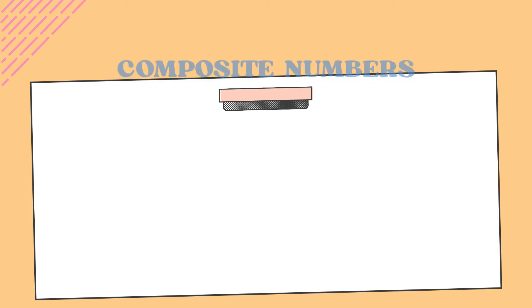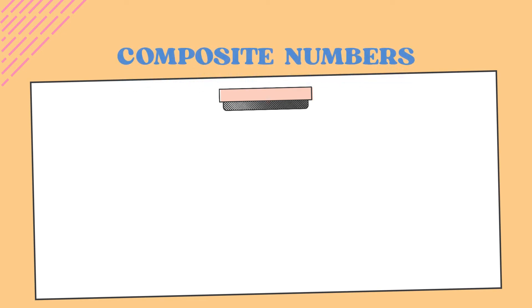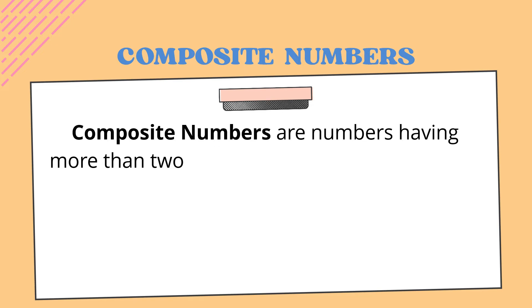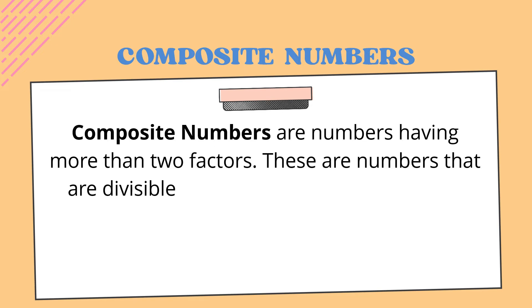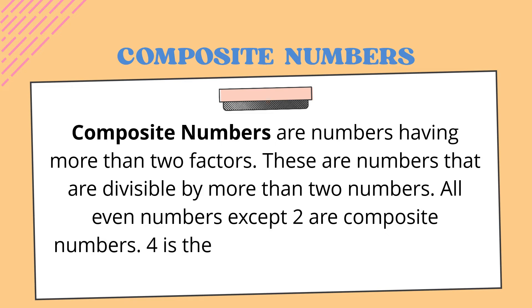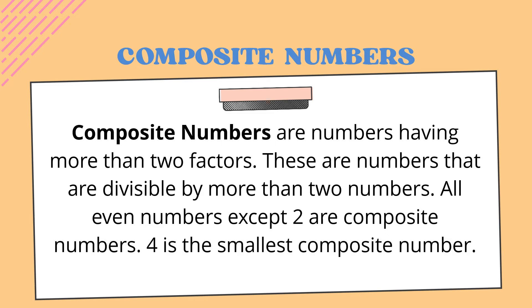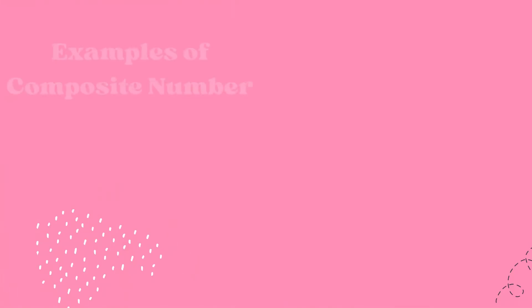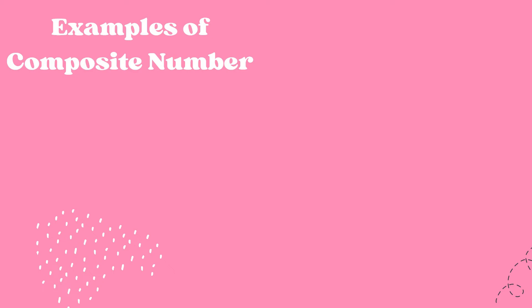Next, we're going to study about composite numbers. What are composite numbers? Composite numbers are numbers having more than two factors. These are numbers that are divisible by more than two numbers. All even numbers except two are composite numbers. Four is the smallest composite number. These are some of the examples of composite numbers.